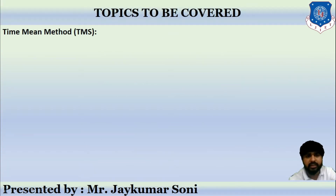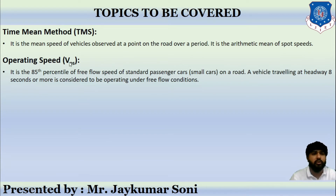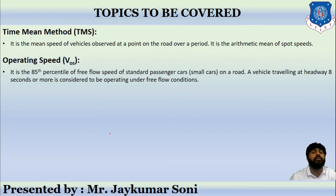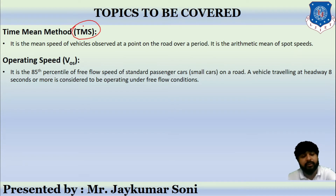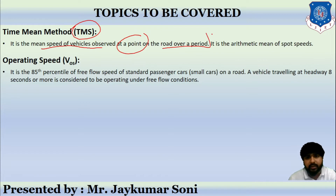Let us begin the session. We will discuss two definitions: the first is called time mean speed and the second is called operating speed. We have already discussed the meaning of time mean speed in our unit on basic traffic parameters. It is the mean speed of vehicles observed at a point on the road over a period — the arithmetic mean of spot speeds.